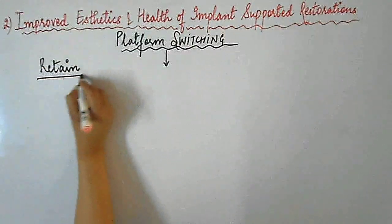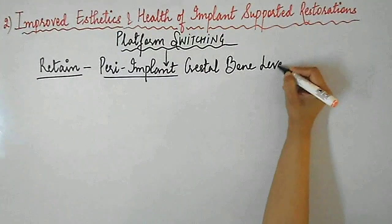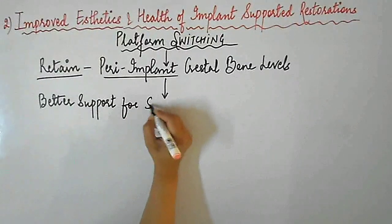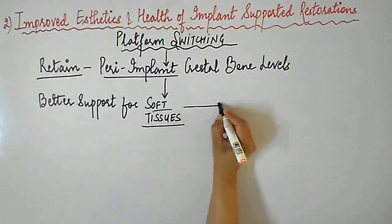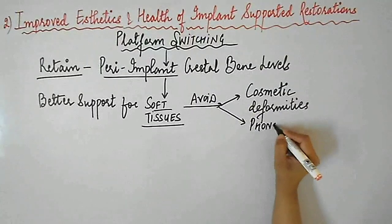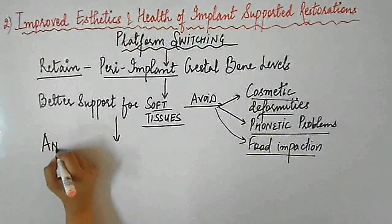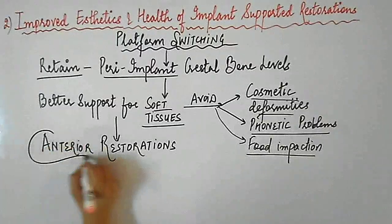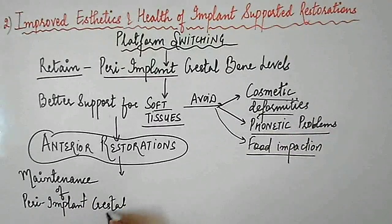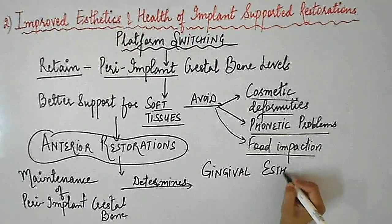When platform switching is used in dental implants, it helps to retain the peri-implant crestal bone levels, thus providing better support for soft tissues. Better soft tissue support helps to avoid cosmetic deformities, phonetic problems, and food impaction. This is extremely important in anterior restorations where aesthetics is of prime concern, as maintenance of peri-implant crestal bone determines the gingival aesthetics and health of implant-supported restorations.